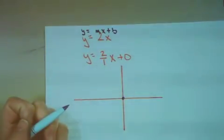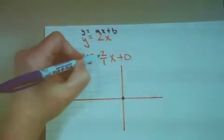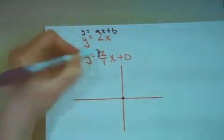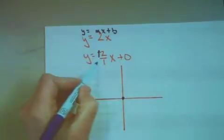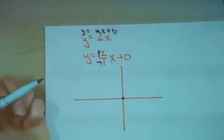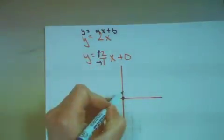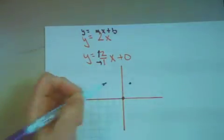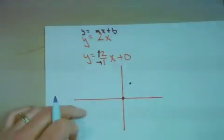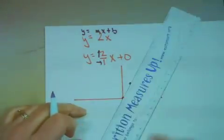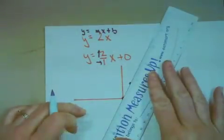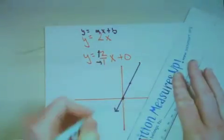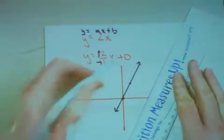Now how about my slope? The slope says we should go up 2 and to the right 1. Up 1, 2, to the right 1. We'll take our nice straight edge, line everything up, and make a nice clean line.